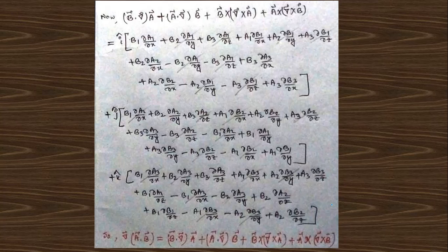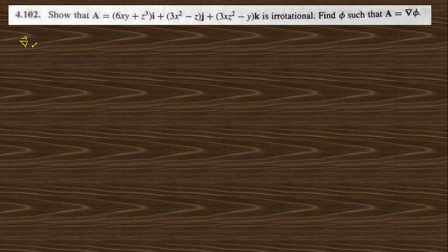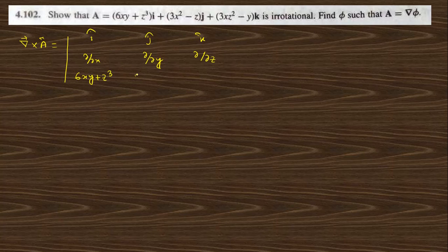Now the next question says to show that vector A is irrotational. To check whether a vector is rotational or irrotational, you need to find the curl of the vector. So curl of A is the determinant with i-cap, j-cap, k-cap in the first row; del/del-x, del/del-y, del/del-z in the second row; and 6xy + z³, 3x² − z, and 3xz² − y in the third row. The i-cap component is the partial derivative with respect to y, and then minus the derivative with respect to z — which gives minus of minus 1.